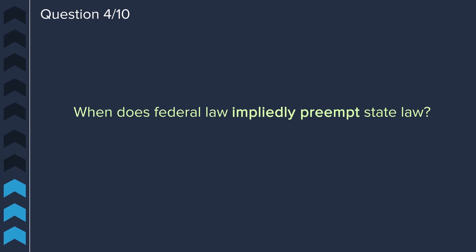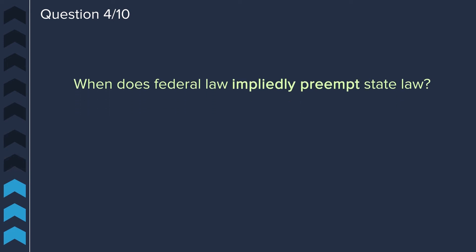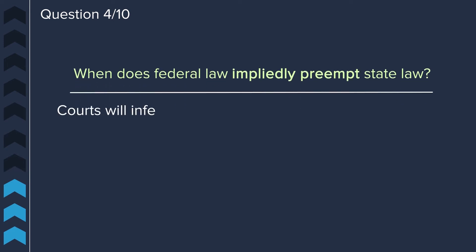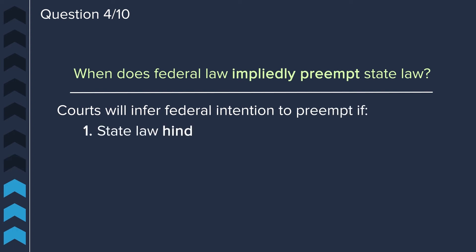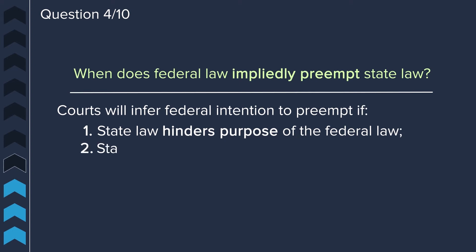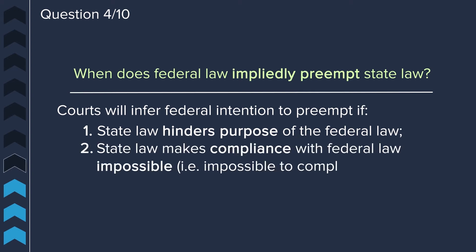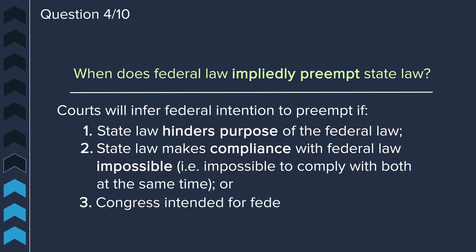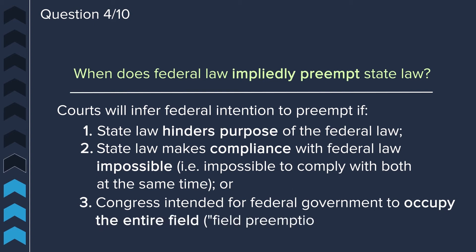Question four. When does federal law impliedly preempt state law? Courts will infer federal intention to preempt if state law hinders the purpose of the federal law, state law makes compliance with federal law impossible, or Congress intended for the federal government to occupy the entire field — also known as field preemption.